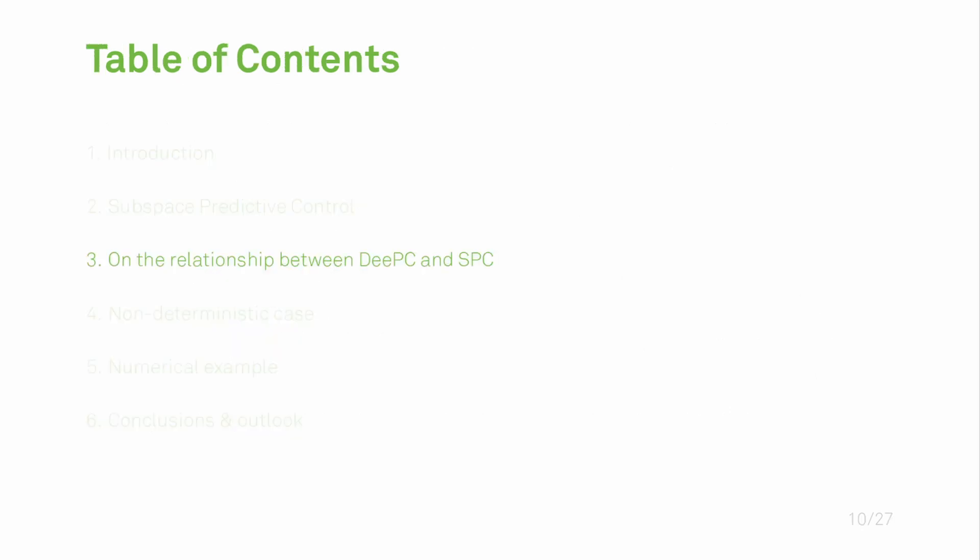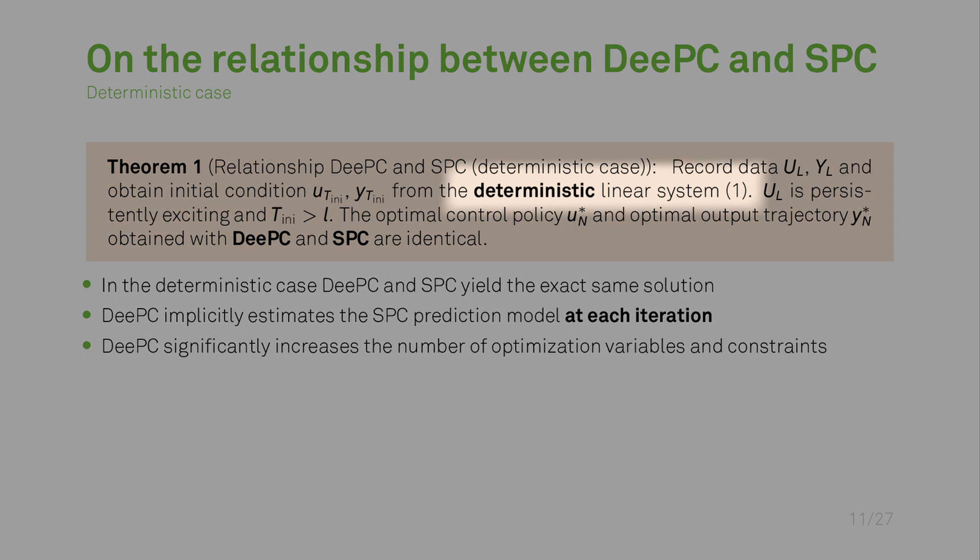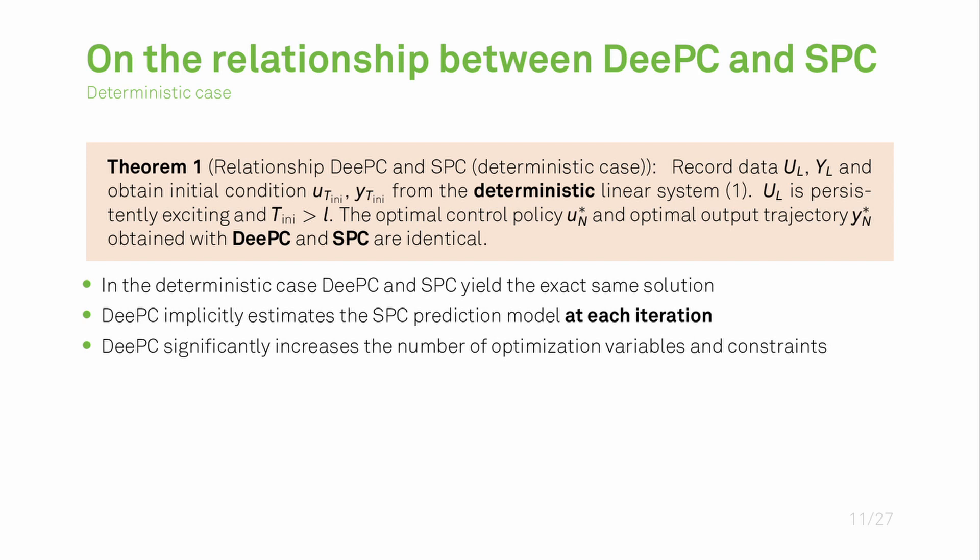This brings me to one of the main contributions of this work on the relationship between DeePC and SPC. In theorem one we are stating that if we record data from a linear time invariant system which is deterministic, so not subject to noise, the presented DeePC and SPC formulation yield the exact same solution. An interpretation of this result is to think that DeePC implicitly estimates the SPC prediction model at each iteration, and this comes at the cost of significantly increasing the number of optimization variables and constraints.